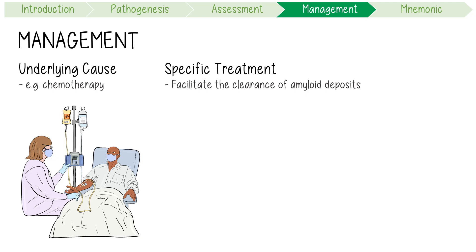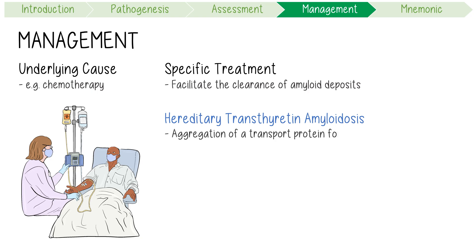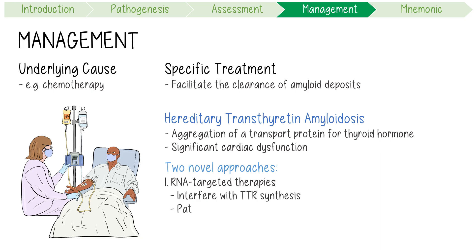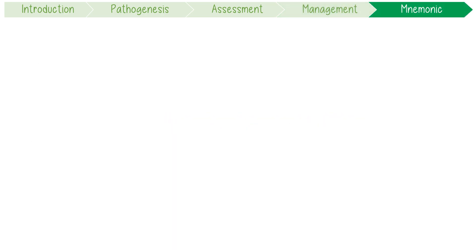This is best seen with hereditary transthyretin amyloidosis, which is due to an aggregation of misfolded transport protein for thyroid hormone. This notably causes significant cardiac dysfunction. Two new approaches have significantly changed patient outcomes: firstly, RNA-targeted therapies that interfere with hepatic TTR synthesis, like patisiran; and secondly, agents that improve the stability of the protein structure, like tafamidis.